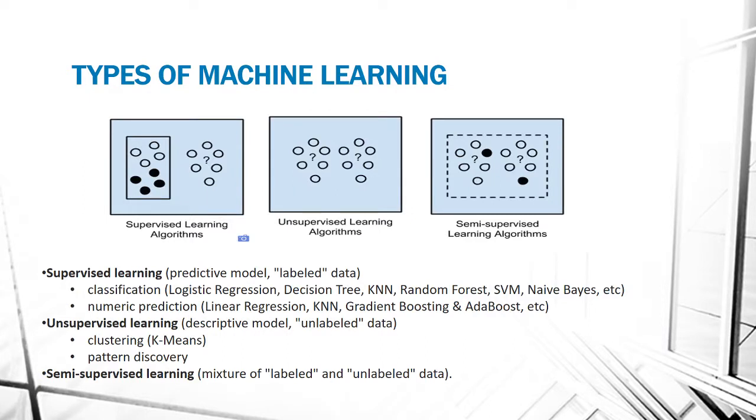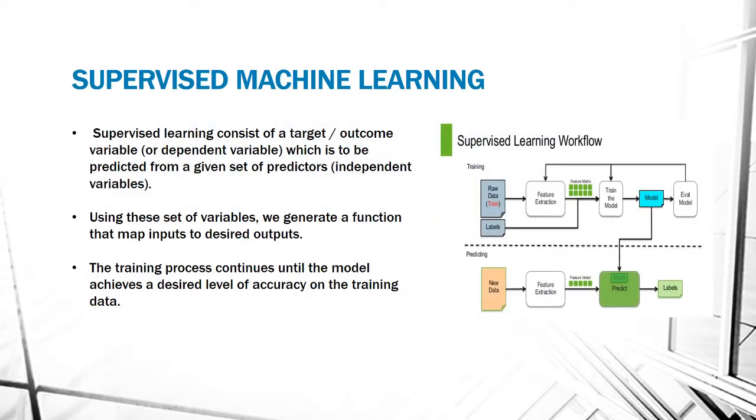There are three types of machine learning: supervised machine learning, which is like a predictive model where we have a labeled dataset; unsupervised learning, which is a descriptive model with unlabeled data; and finally semi-supervised learning, which is a mixture of labeled and unlabeled data.